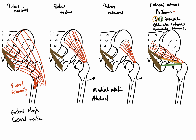Quadratus femoris is the most inferior of these muscles. It passes from the ischial tuberosity straight across to the intertrochanteric crest — the crest running between the greater and lesser trochanters.